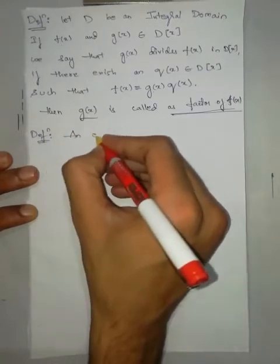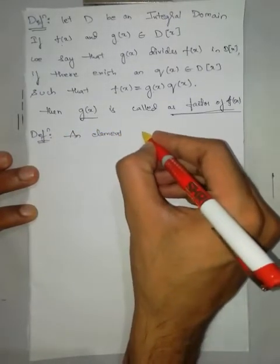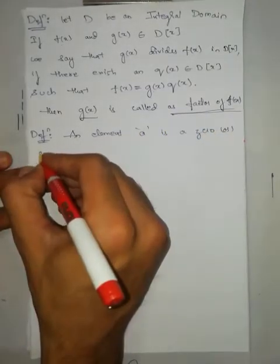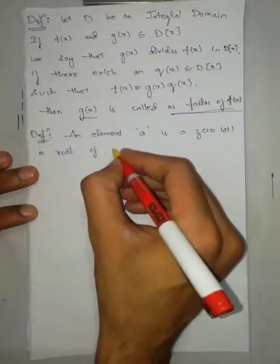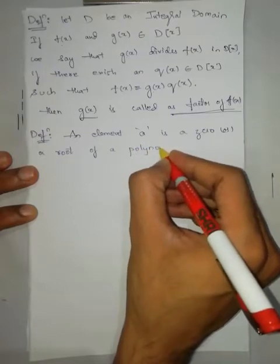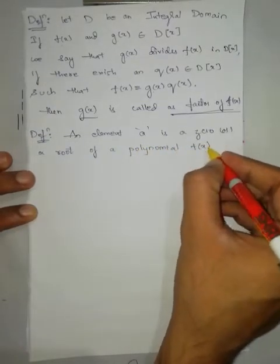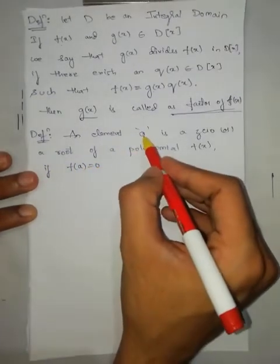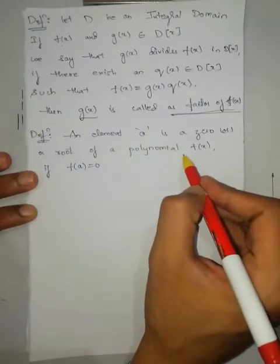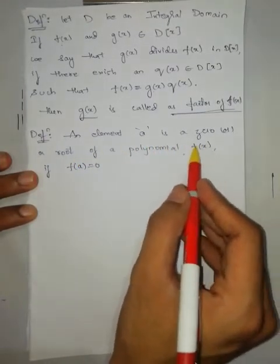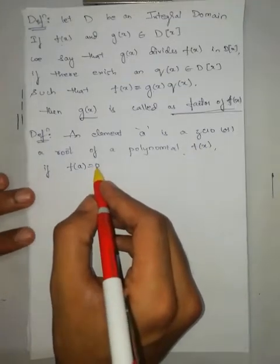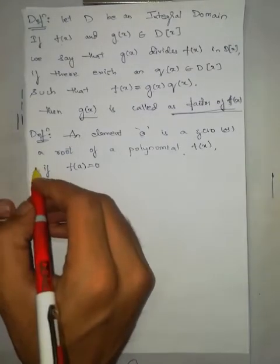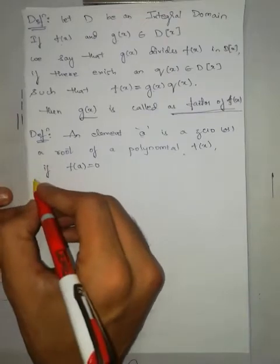Definition: an element a is a zero or a root of a polynomial f(x) if f(a) equals zero. An element is said to be a zero or root of a polynomial if, when I substitute that element into the polynomial and it becomes zero, then we say that element is a zero or root of the polynomial.